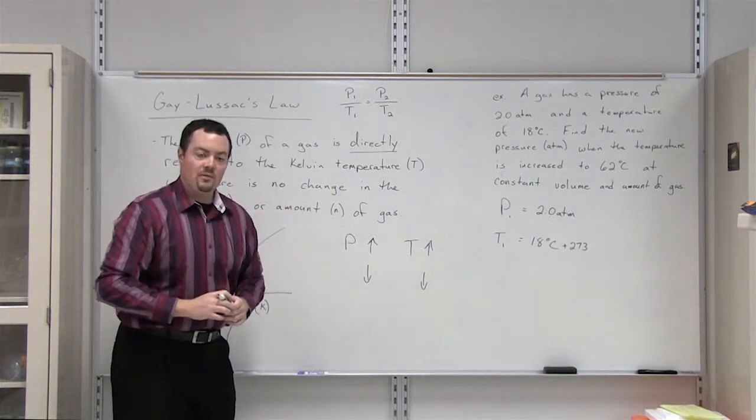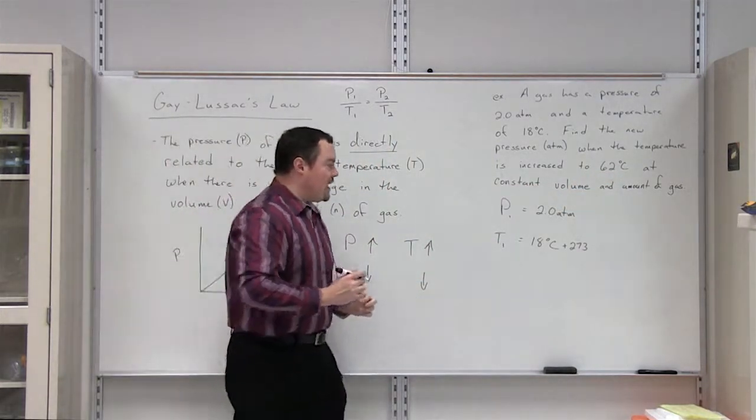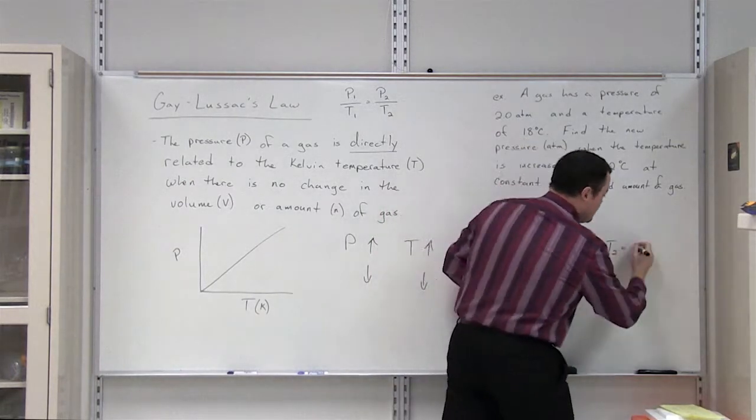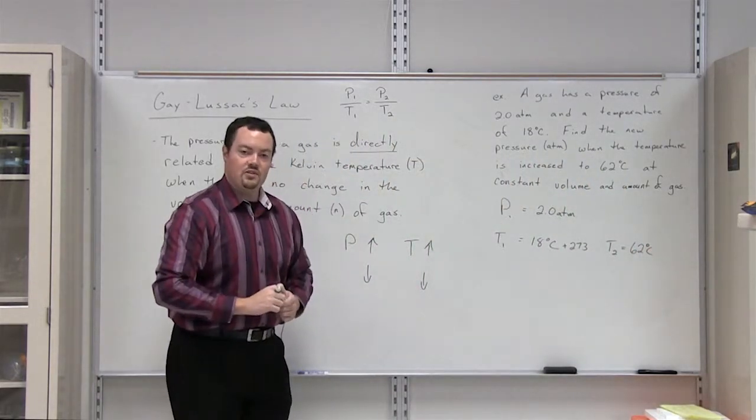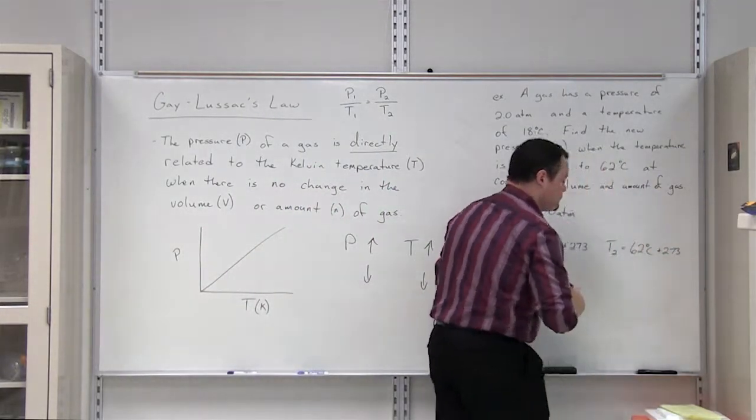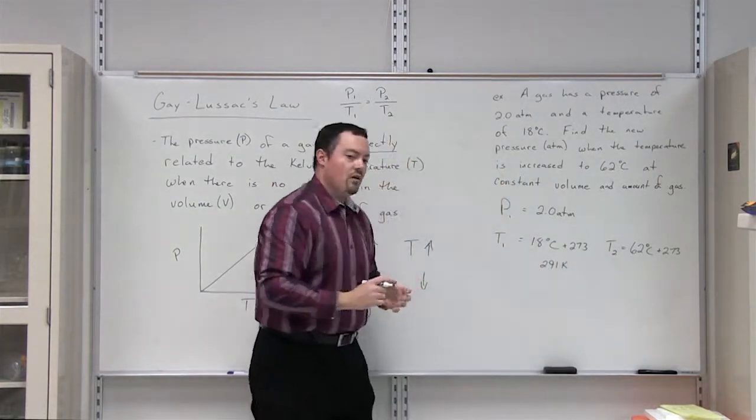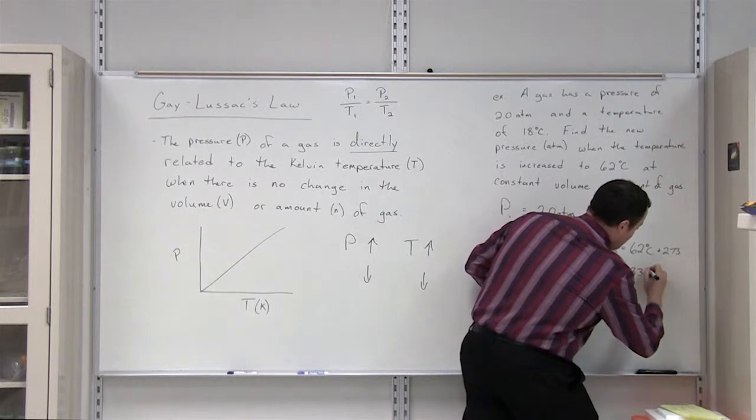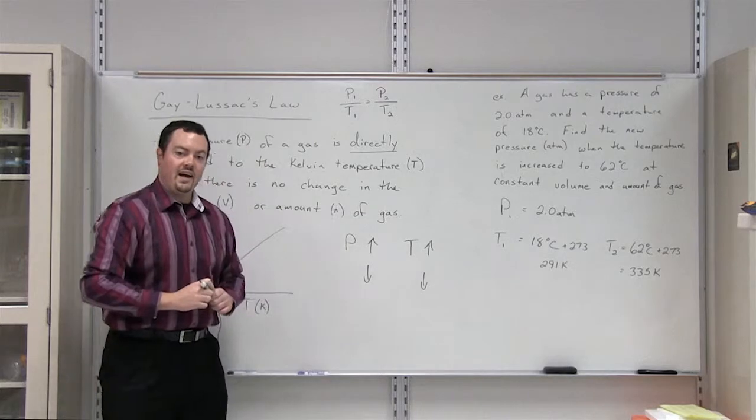Now what else does the problem give us? It tells us that the temperature of this gas in condition number two has been increased to 62 degrees Celsius. Once again, the Celsius temperature has to be converted to Kelvin before we can use it. So that gives us a temperature of 291 Kelvin for our temperature of our gas in condition one. And 335 Kelvin is the temperature of our gas under condition number two.